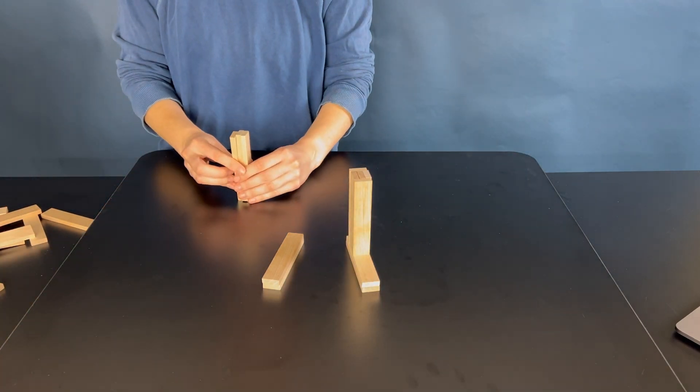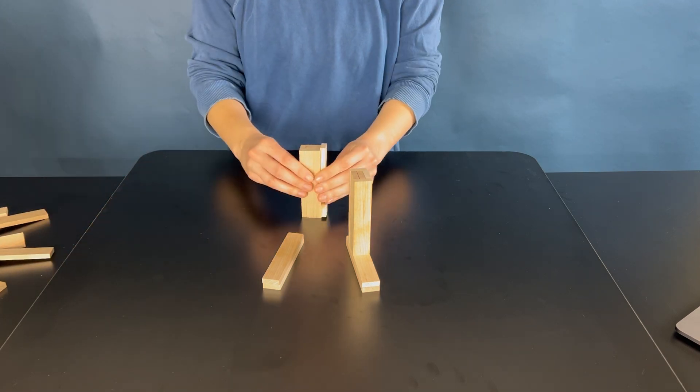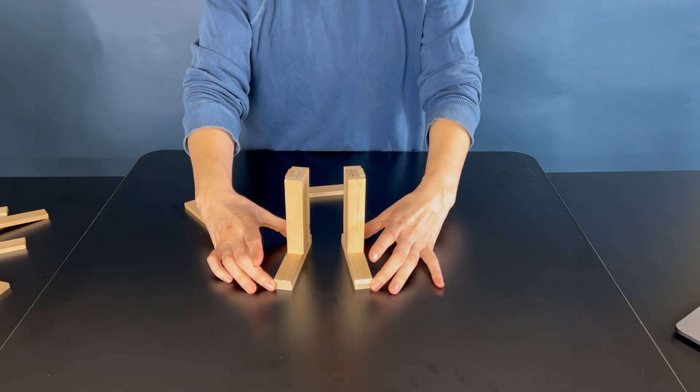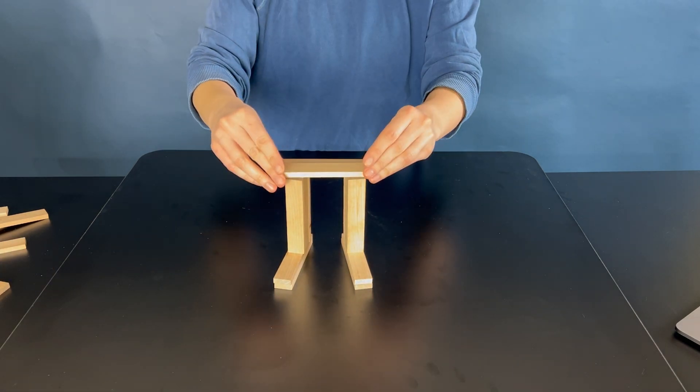You can also build it as one unit before placing it on the feet. Then you can scooch them together, place two planks on top of that.